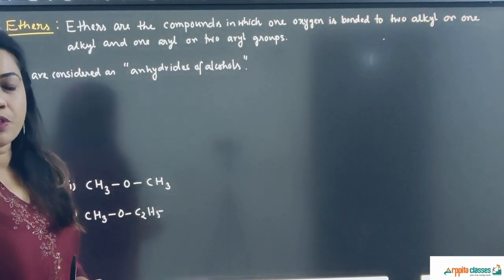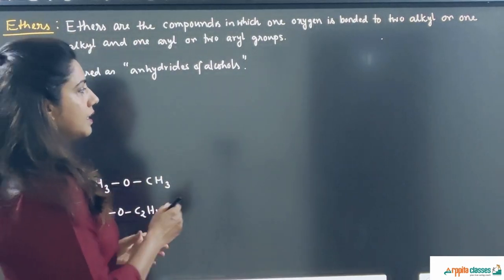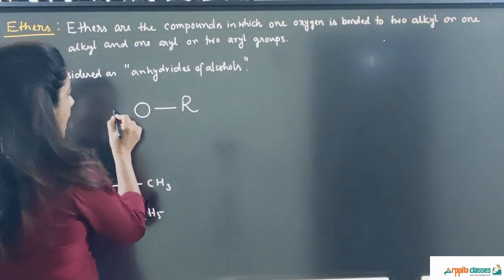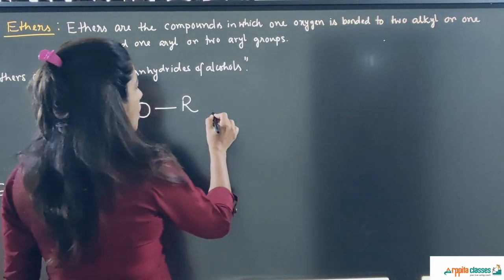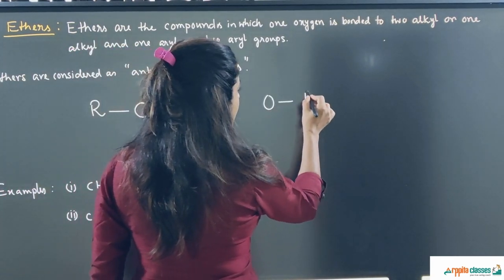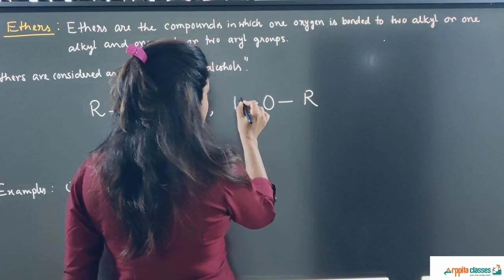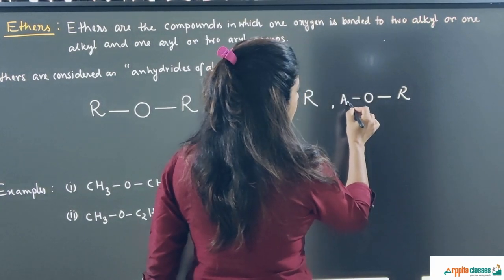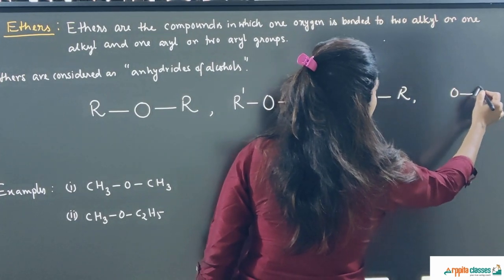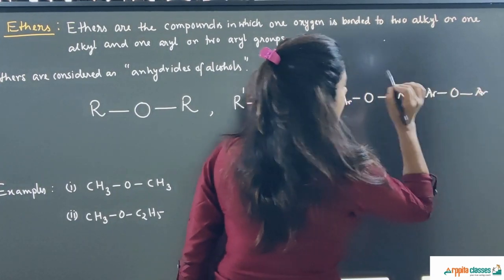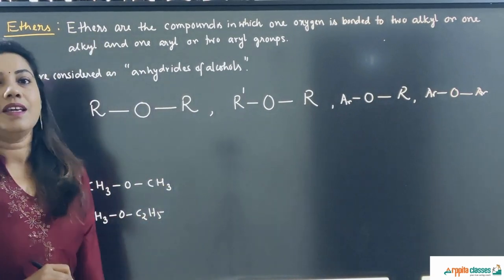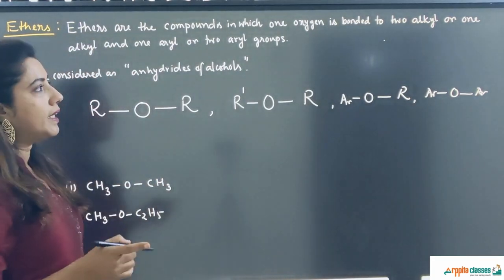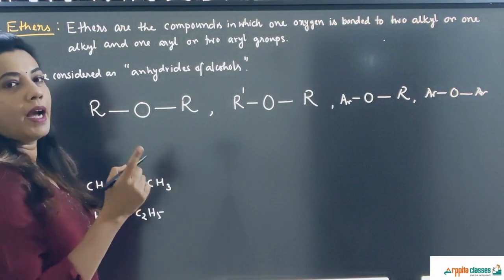Ethers are what type of compounds? Ethers are the compounds where oxygen atom is bonded with either two alkyl groups of the same type, or maybe it is bonded with two different alkyl groups, or it may be bonded with one alkyl and one aryl group, or maybe oxygen is bonded with both aryl groups. These types of compounds are known as ethers.